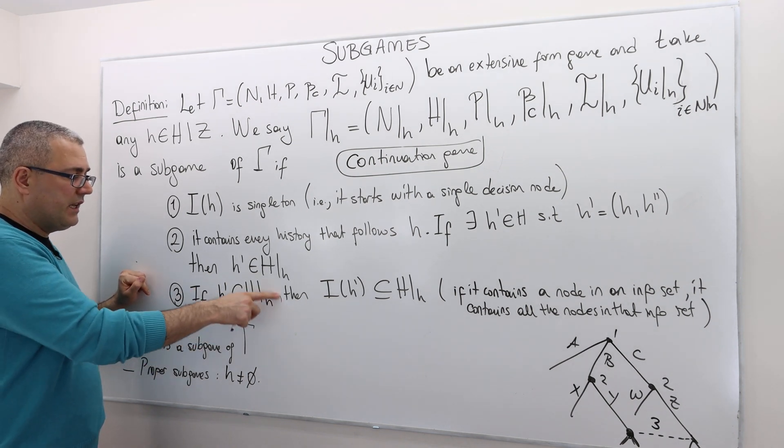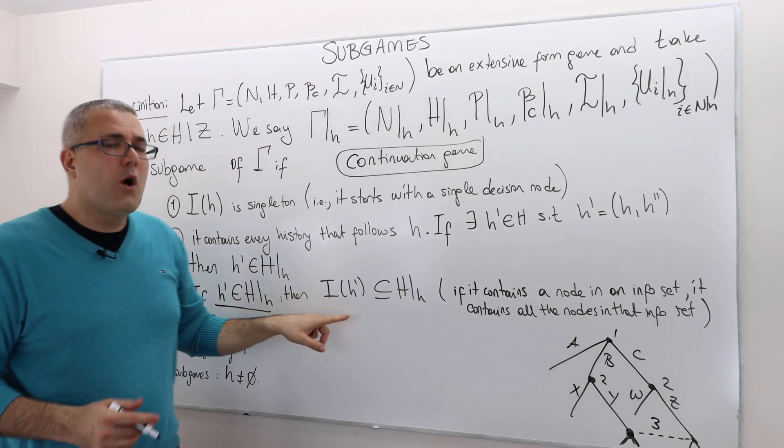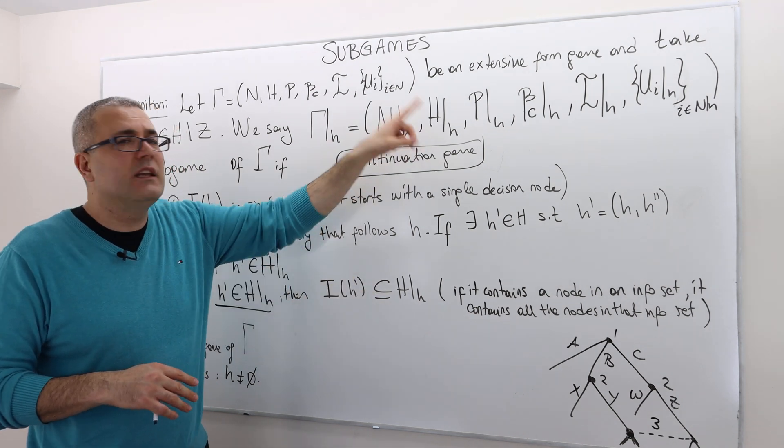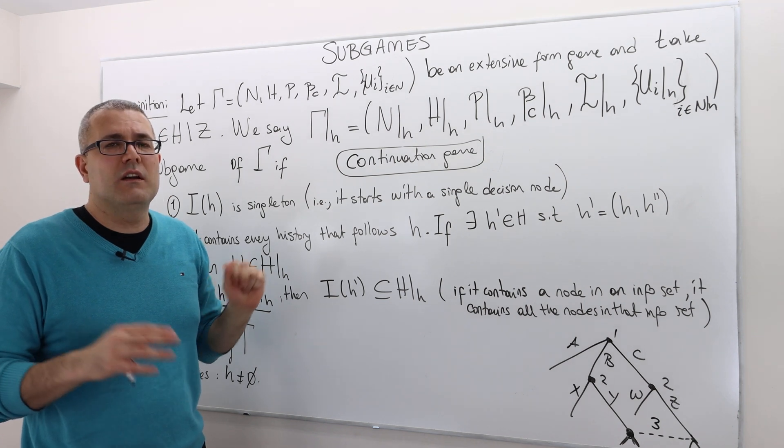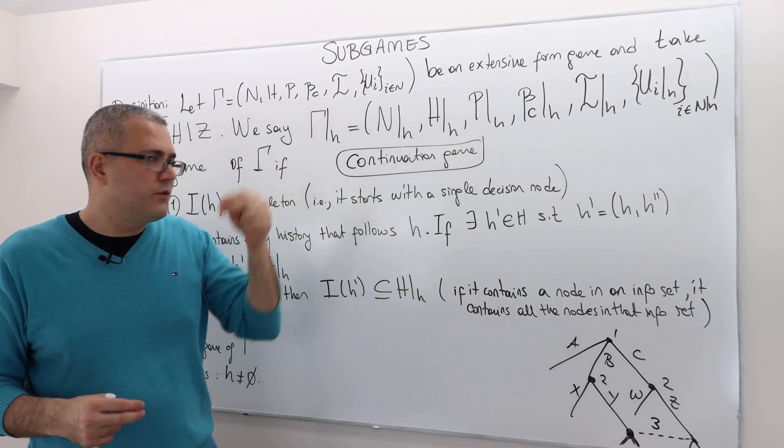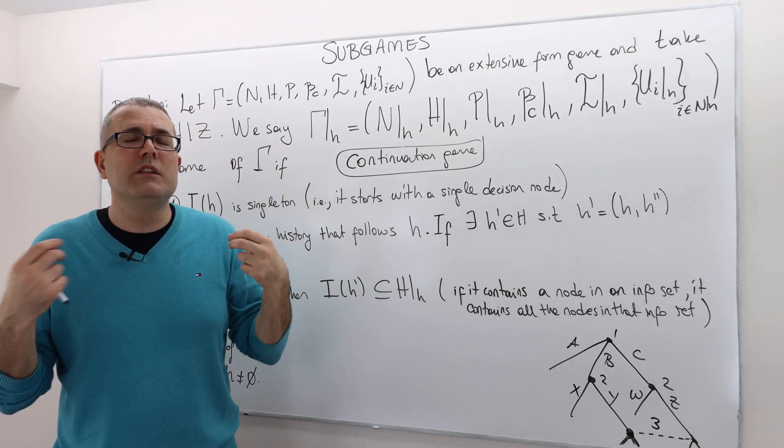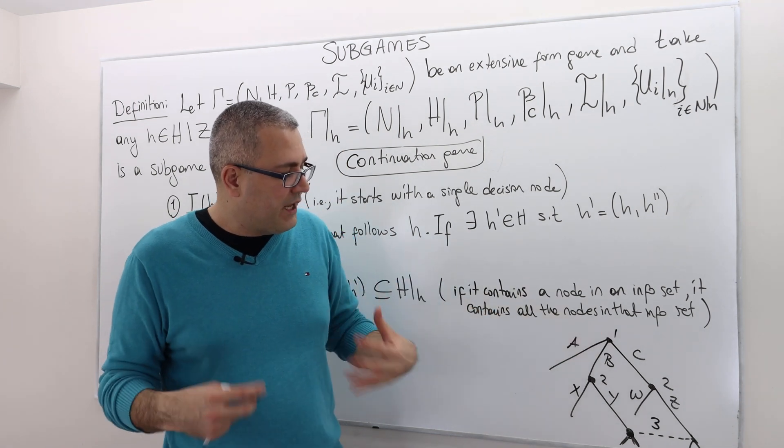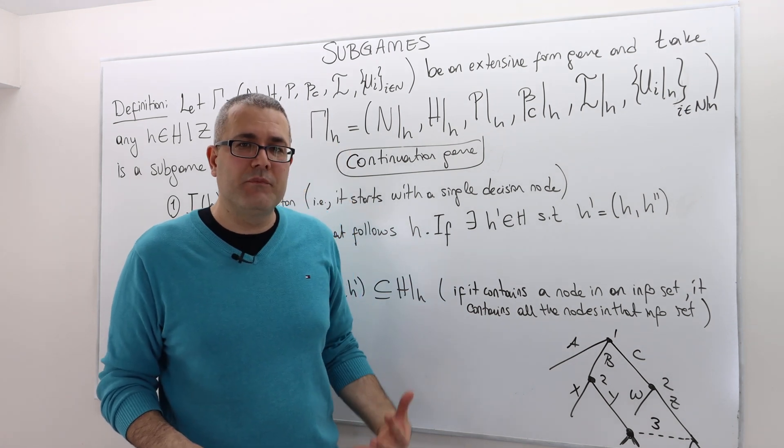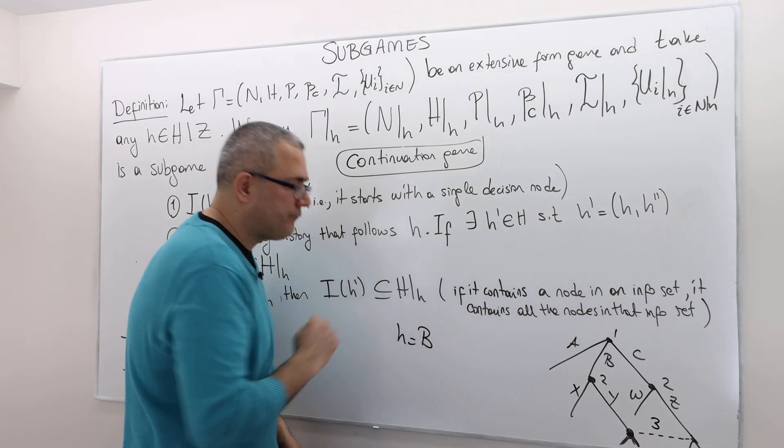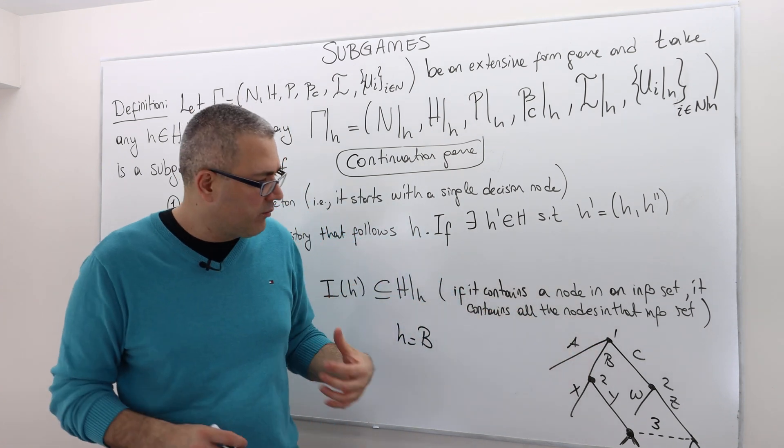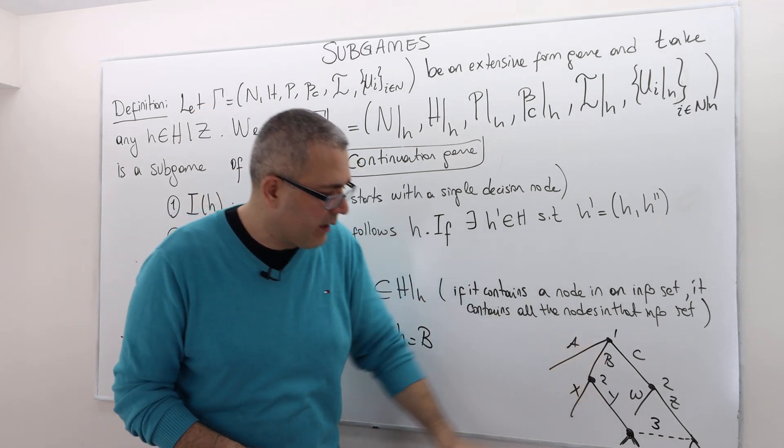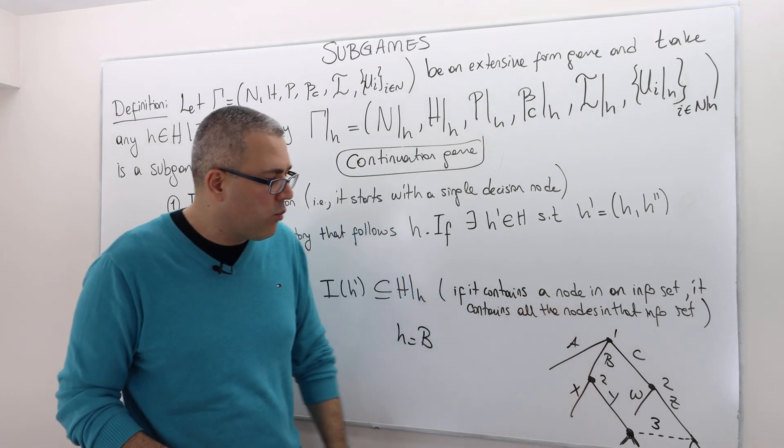And then the third important property is the following. If some history is in this set of histories in this subgame, well then, all the other histories in the same information set with H prime must also be in the histories of this subgame, which means if it contains a node in an information set, it must contain all the nodes in that info set. So, for example, again, let's come back to this simple example. My H, can it be, for example, B? Well, it can't be, why? Well, because if H is equal to B, then what happens, for example, one continuation—remember, it has to contain all the histories which will follow B, meaning it has to include B, Y, blah blah. But at least it has to include B, Y. But the problem is, if B-Y, according to third condition, if B-Y is in this set, well then, C-Z, it must also be in the set.